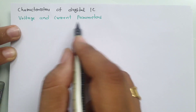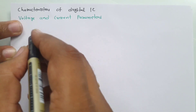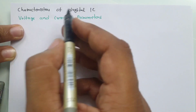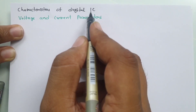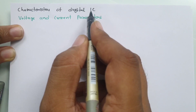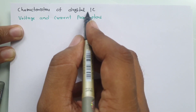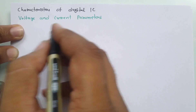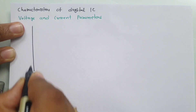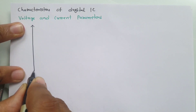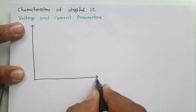To understand voltage and current parameters of digital integrated circuits, first one should know what is the input voltage span of an integrated logic gate and what is the output voltage span of an integrated logic gate. I'll explain this by graphical representation first, and then define all those parameters one by one.